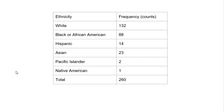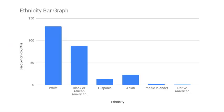Earlier we saw a frequency table showing the counts of different ethnicities taken from a sample of 260 people. A bar graph is just turning those counts into bars. Here we have our ethnicities on the x-axis in no particular order — you'll typically see people put the highest on the left down to the lowest on the right, but it doesn't have to be that way. On the y-axis is the frequency or counts, so you can see that the white ethnicity had more counts than any other.